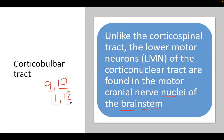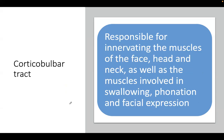Clinically, a patient with a lesion or damage to the corticobulbar tract would present with difficulty in swallowing and difficulty in speech — dysphagia and dysarthria — as well as problems with phonation and swallowing. This is because the nuclei of cranial nerves 9, 10, 11, and 12 are found in the brainstem. The corticobulbar tract innervates the muscles of the face, head, and neck, including muscles involved in swallowing, phonation, and facial expression.